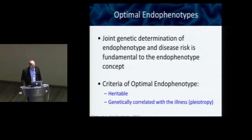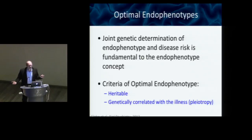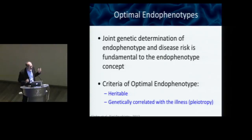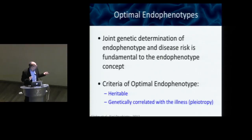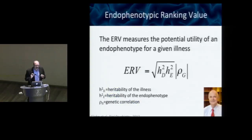In thinking about this, my genetics colleague John Blangero and I were sitting in a bar — because good science happens in bars. We were arguing about how do we fix this problem, how do we find some way of conceptualizing endophenotypes so we can rank them. We came up with the notion that the core issue of an endophenotype is joint genetic determination: the same genes have to influence the phenotype and the endophenotype. What's really critical is that the endophenotype is heritable and genetically correlated with the illness, or there's some evidence for pleiotropy. We actually wrote the equation on a napkin.